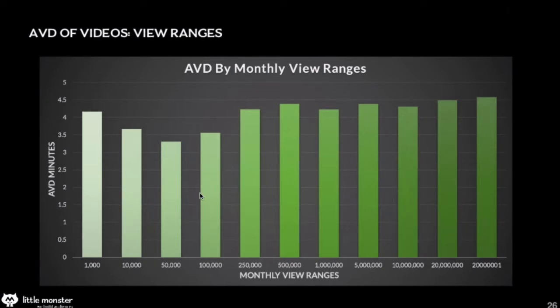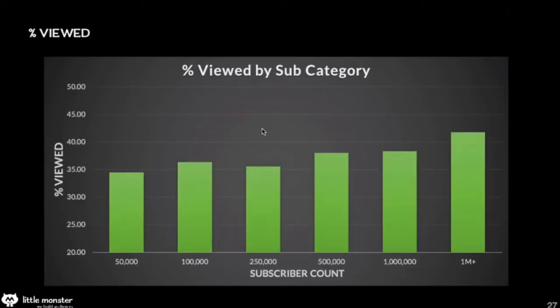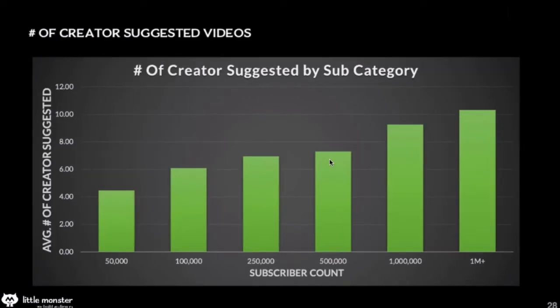Looking at monthly view ranges — how many views per month — once you start getting people to watch a video for over four minutes, you're doing really well. He emphasized that percentage viewed was not as important as absolute watch time, because a short video and a long video could have very different watch times. Average view duration could be 50%, which means one minute on one video and 20 minutes on another. That said, the people towards the higher end were having longer videos and also getting people to watch longer — edging up towards 40% of the video.